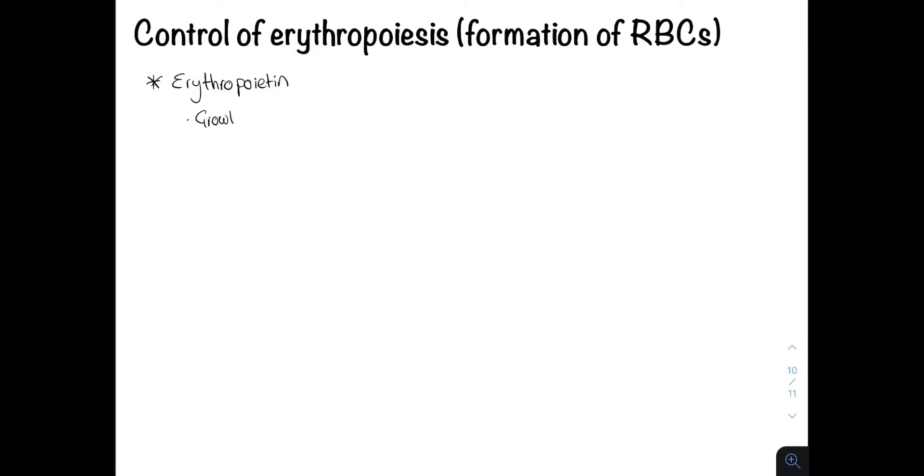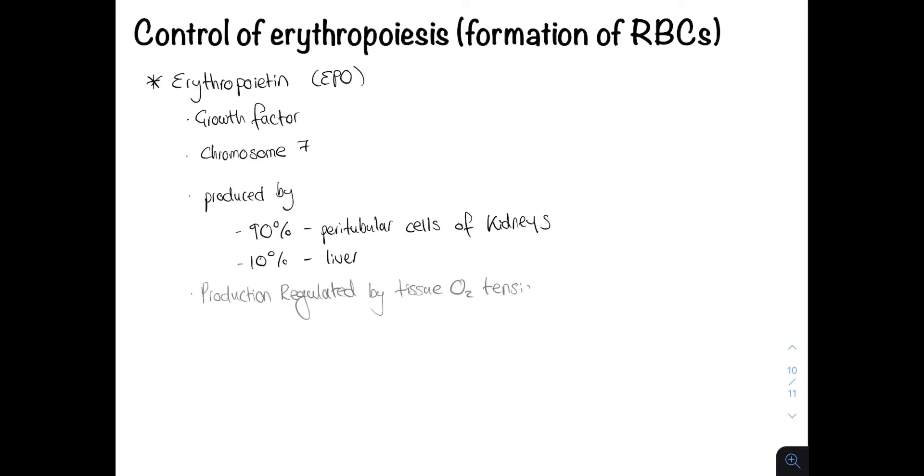Erythropoiesis is regulated by a growth factor called erythropoietin or EPO. EPO is produced mainly by the peritubular cells of the kidneys but can also be produced by the liver. Importantly, the production of EPO is regulated by tissue oxygen tension, so its production increases during hypoxia, for example during anemia or cardiopulmonary pathologies.